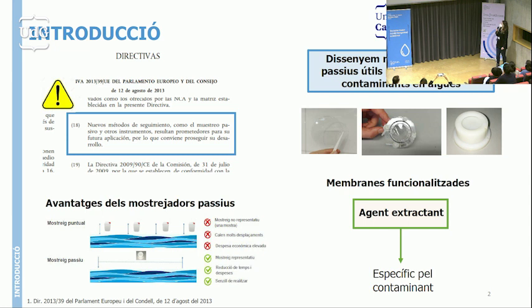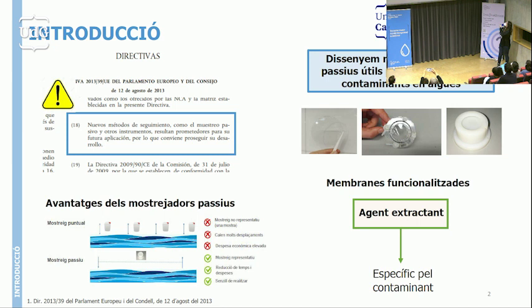Quins avantatges ens donen aquests mostrejadors passius? Amb el mostreig puntual cal fer molts viatges per anar fins al lloc d'estudi, agafar mostres i tornar. En canvi, amb un mostrejador passiu anem un dia, el deixem el temps que considerem convenient i tornem a recollir-lo. Això implica menys despeses tant a nivell de temps com econòmic. Els nostres mostrejadors passius es basen en membranes funcionalitzades que tenen inclòs un agent extractant, que serà específic pel tipus de contaminant que estem estudiant. Depenent de quin sigui l'analit al qual ens interessi, utilitzarem un extractant o un altre.